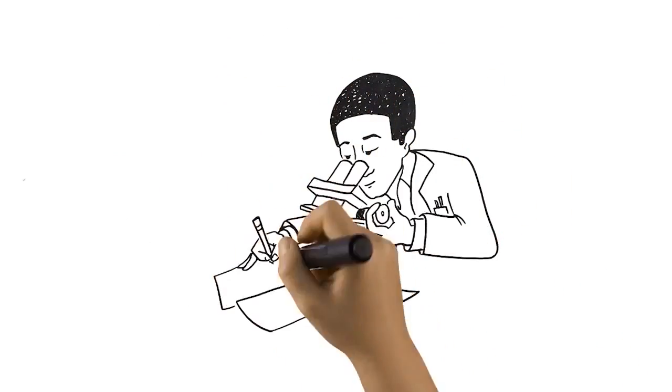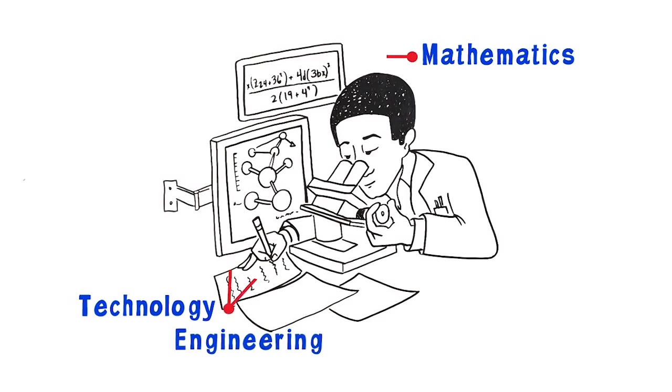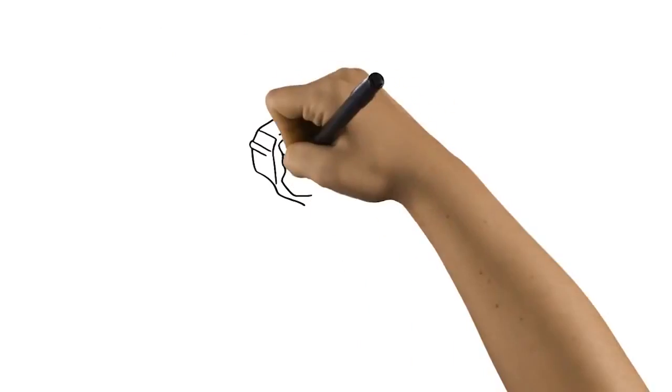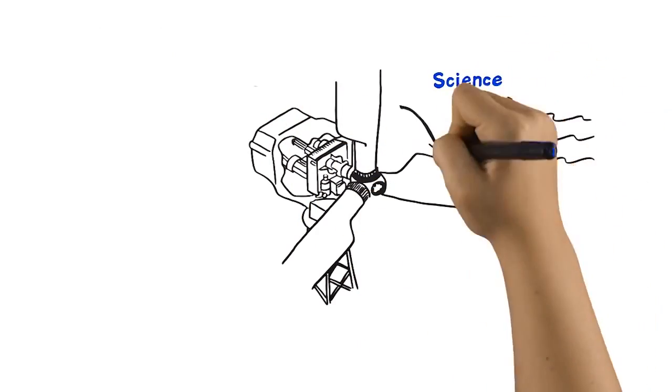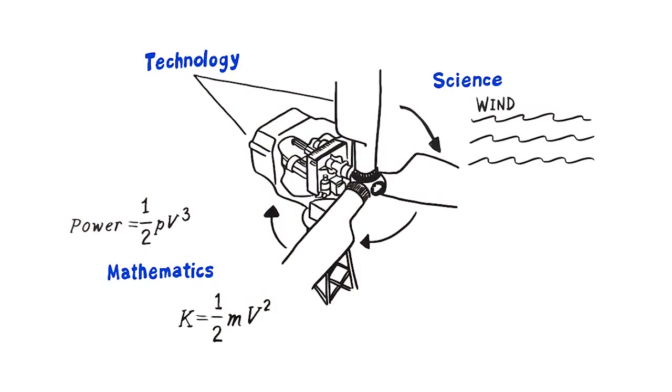After all, in the real world, science relies on technology, mathematics, and engineering. And engineering depends on findings from science, the application of mathematics, and the use of technological tools.